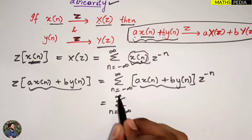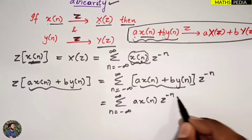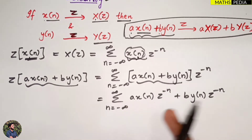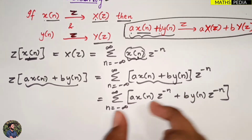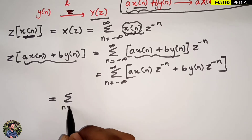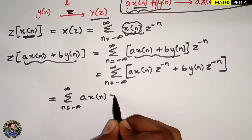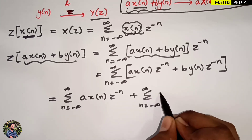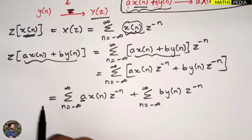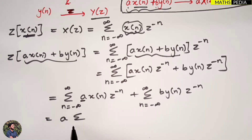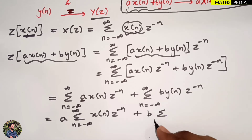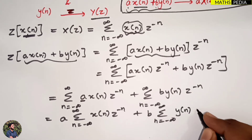Expanding gives summation from n equal to minus infinity to infinity of a·x(n)·z^(−n) plus b·y(n)·z^(−n). We can take the summation to both terms separately. Then, since a and b are constants, we take them outside: a times summation of x(n)·z^(−n) plus b times summation of y(n)·z^(−n).